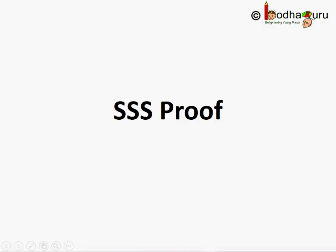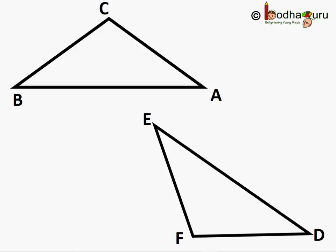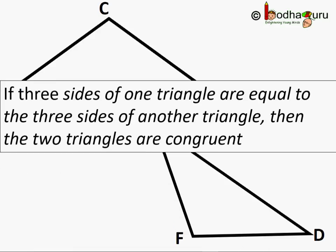Hello friends. If three sides of one triangle are equal to the three sides of another triangle, then the two triangles are congruent. We know it as the SSS congruency rule — that is, Side Side Side. So let's prove it.